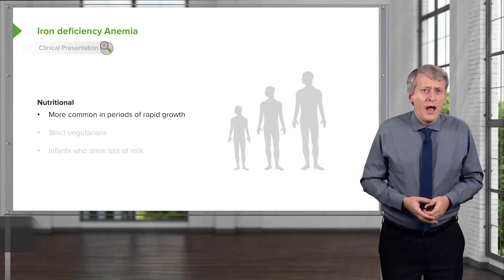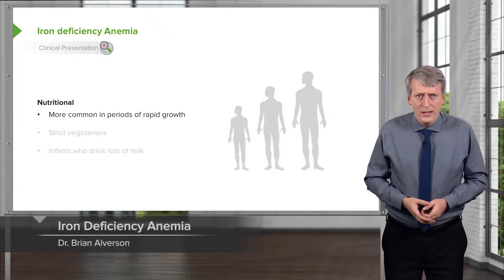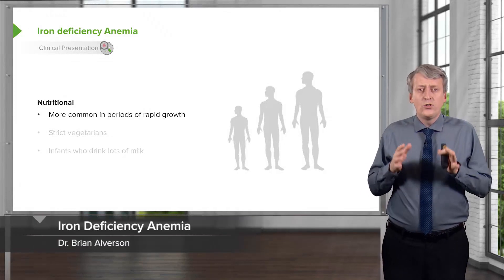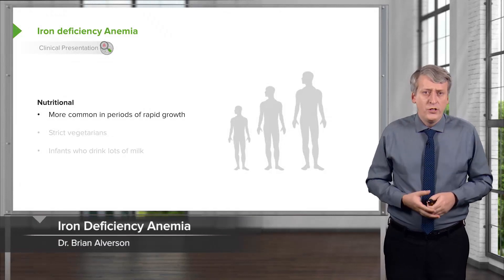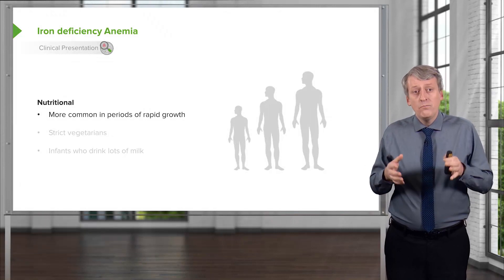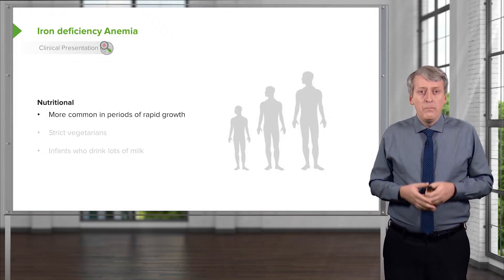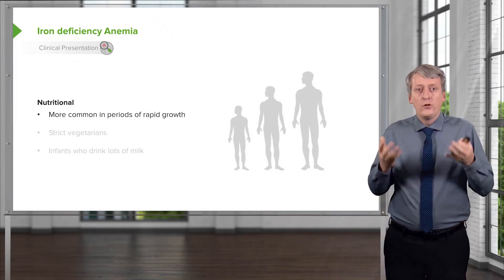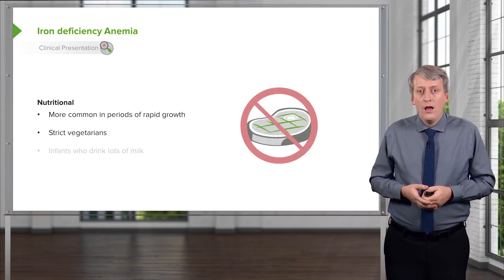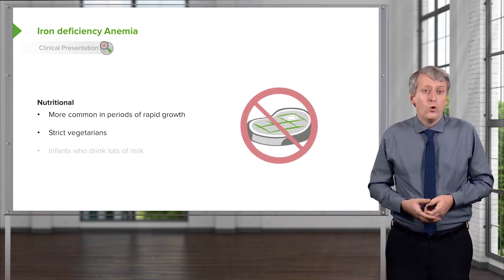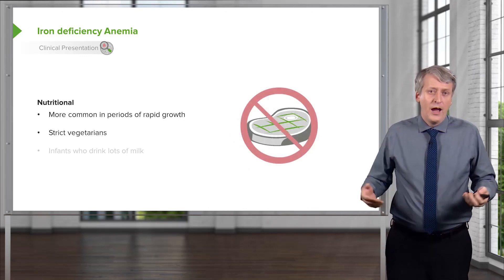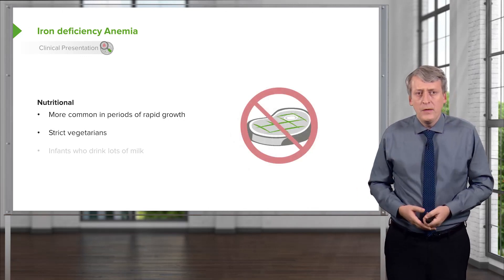Let's focus on iron deficiency anemia, because this is so common in children. This is more common in periods of rapid growth, when kids need their iron the most. It's also more common in strict vegetarians because iron is replete in meat.